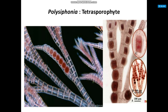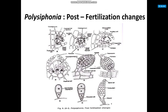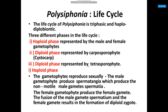This figure shows the tetrasporophyte of Polysiphonia. The life cycle of Polysiphonia is triphasic and haplodiplobiotic, with three different phases: the haploid phase represented by the male and female gametophyte; the diploid phase represented by the carposporophyte (cystocarp); and the diploid phase represented by the tetrasporophyte. At the haploid phase, the gametophyte reproduces sexually — the male gametophyte produces spermatangia in which non-motile male gametes called spermatia are produced.